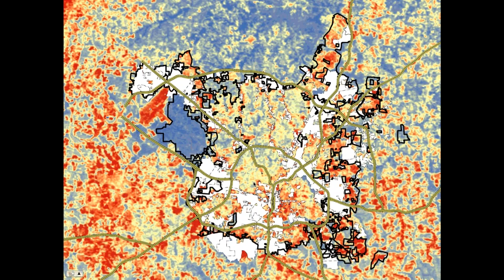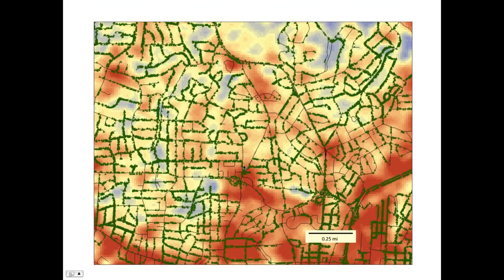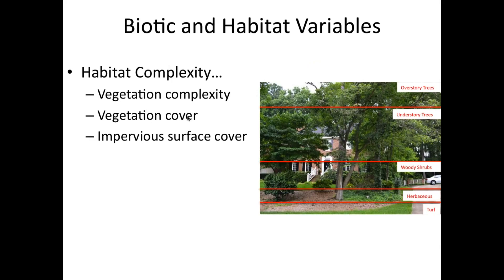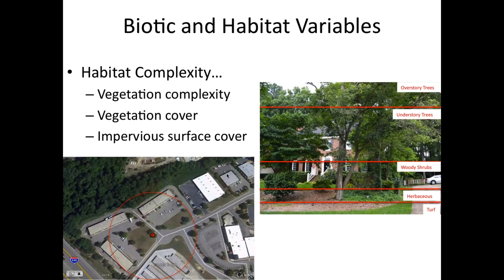At a smaller scale, we use city tree maps — all the green dots on this map are willow oak trees from the city of Raleigh. We put those on top of the surface temperature map and look at trees in hot red areas just a couple blocks away from cooler tree areas, allowing us to compare temperature of trees while keeping other variables fairly constant. On hundreds of trees, we count scale abundance, measure natural enemies, take tree temperature, measure habitat complexity, how much vegetation and how many layers are present, and measure impervious surface using satellite images.